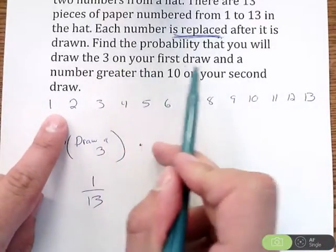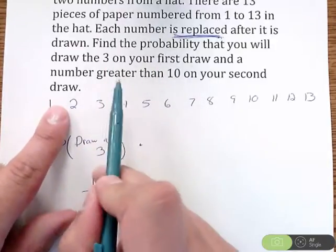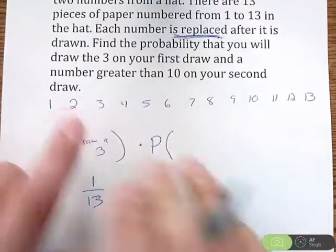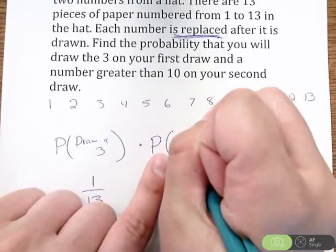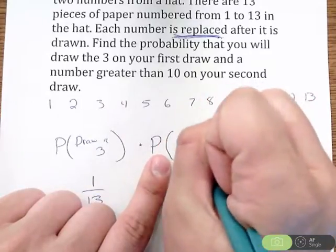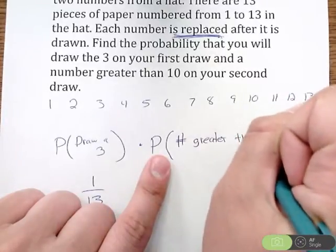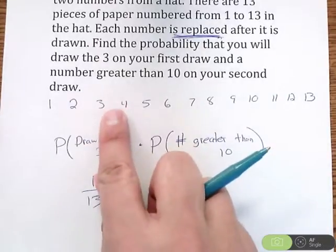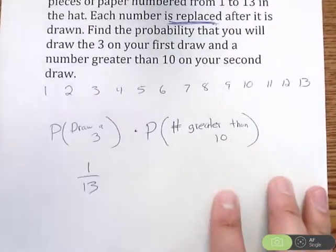So now it says on your first draw draw three and a number greater than 10 on your second draw. So everything's back to normal, nothing changed. So now we're just finding the probability that we have a number greater than 10. We have no type of condition there because I put it back.